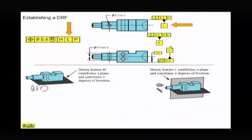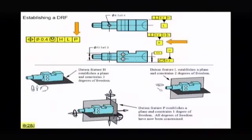And then now we're going to see what the next datum feature is. It says datum feature P. And datum feature P, it looks like it's that edge. And you see what that one does? That stops the final degree of freedom. And now the part can't translate back and forth. So all six degrees of freedom have been constrained, and now we can make our measurements or be able to discuss or talk about this part.